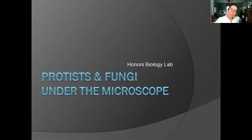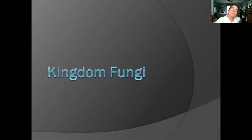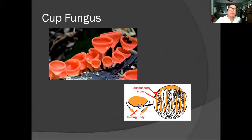We're looking at protists and fungi under the microscope. First we're going to look at the kingdom fungi. Remember that members of that kingdom can't photosynthesize. They do have cell walls, but not the same kind as plants have, and they need to eat other things because they can't photosynthesize.